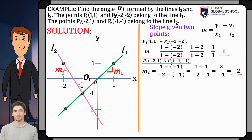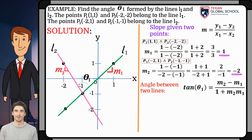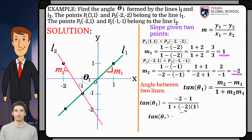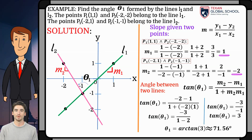For line l2, its slope is -2. Now, use the formula shown by substituting the values of the slopes. By substituting and simplifying, results that the tangent of theta1 is equal to 3. To solve for theta1, use arctangent, or the second function on the calculator, of 3. Then, obtain an angle of two lines theta1 of 71.56 degrees.